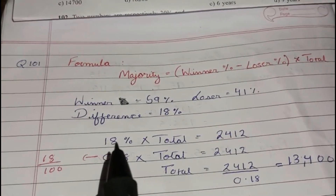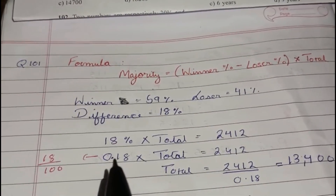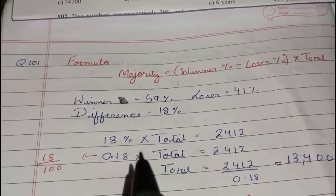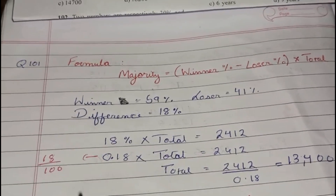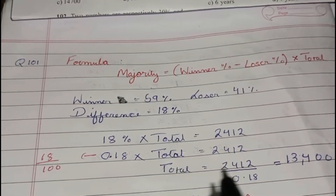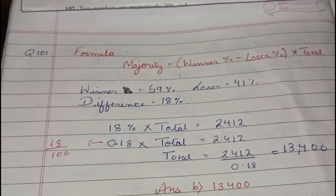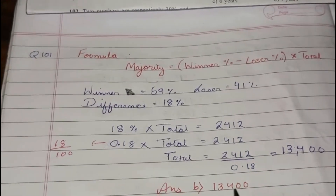Substituting the values: 18% into total equals 2412. Converting 18% into decimal gives 0.18. Solving this, we get the total to be 13,400. Hence option B is the right answer.